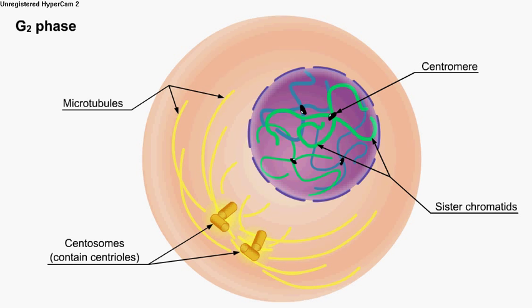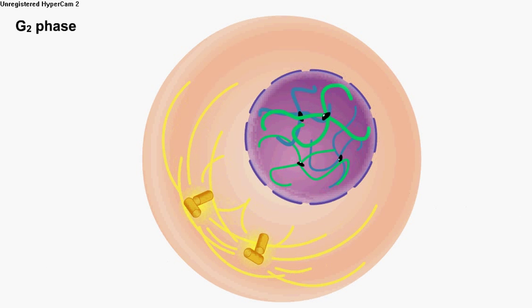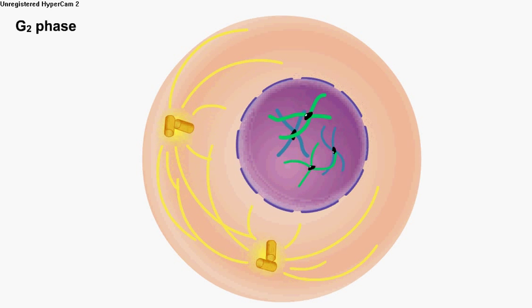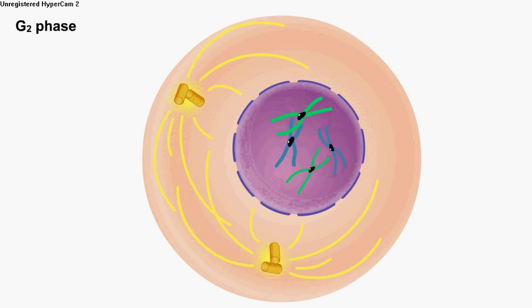As the cell enters the M phase, the two centrosomes begin to migrate toward opposite poles of the cell. At the same time, the chromosomes condense into dense structures that can be seen with the light microscope.